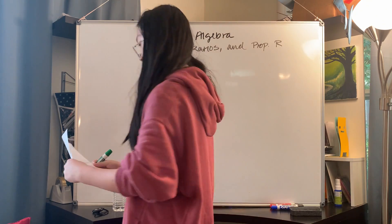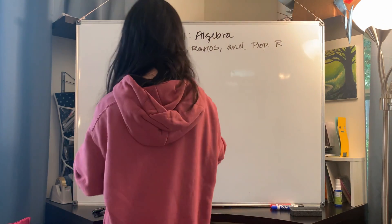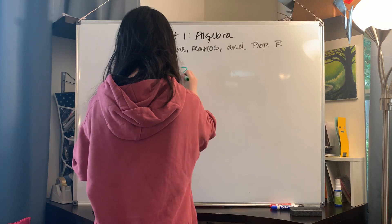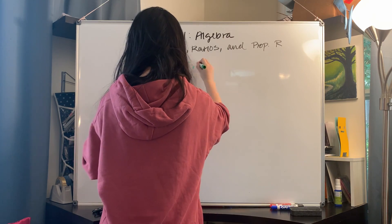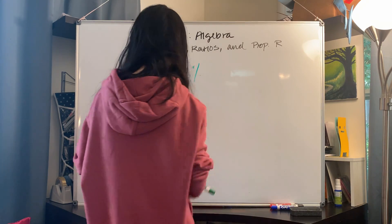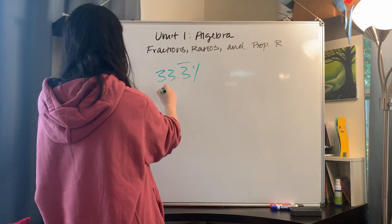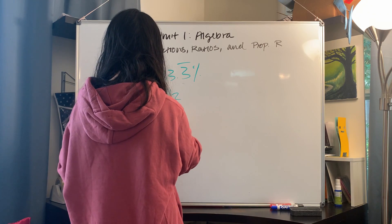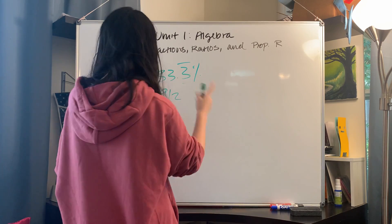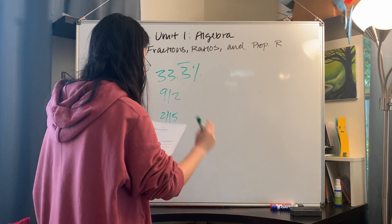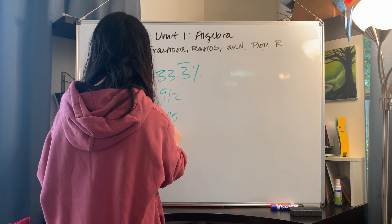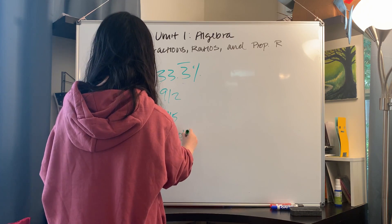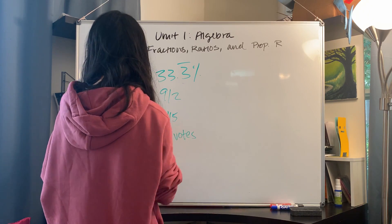In a school election, candidate A got 33.3% of the votes cast, B got 9/20ths, C got 2/15ths, and the other candidate D got the remaining 75 votes. So how many students voted in the election?